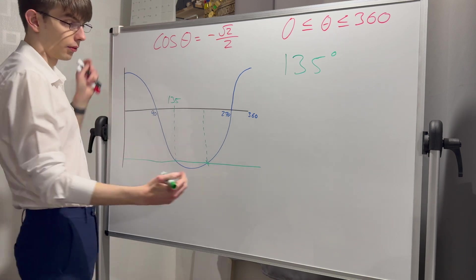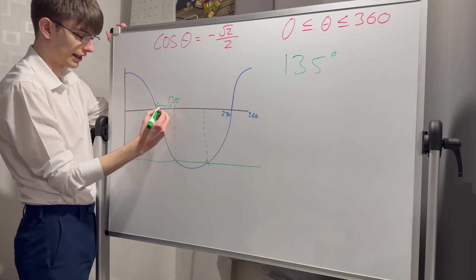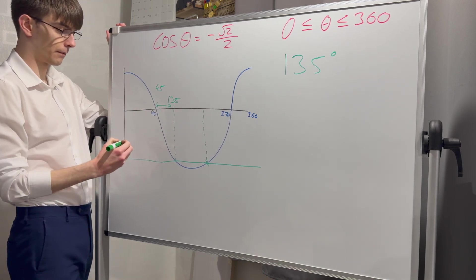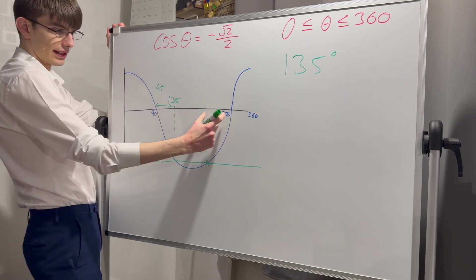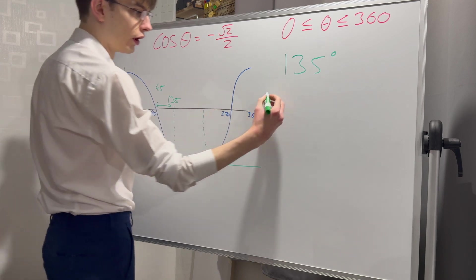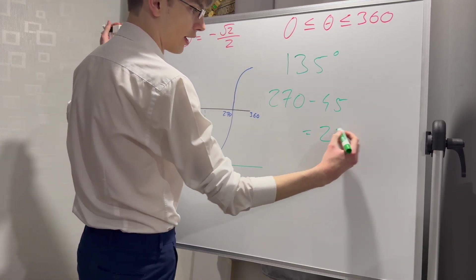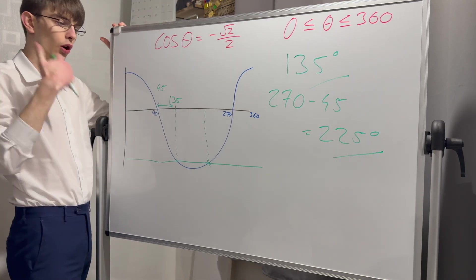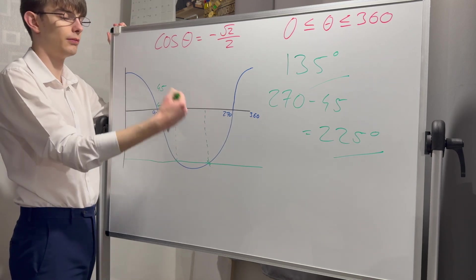I'm going to draw another perfectly vertical line up to my x-axis. How do I find this? I'm going to use the symmetry between 90 and 270. The distance between 90 and 135 is 45, which means the distance here is going to be 45. So my other angle is 270 minus 45, which is 225. With the graph, immediately I see there's only two values, but this time they are negative.